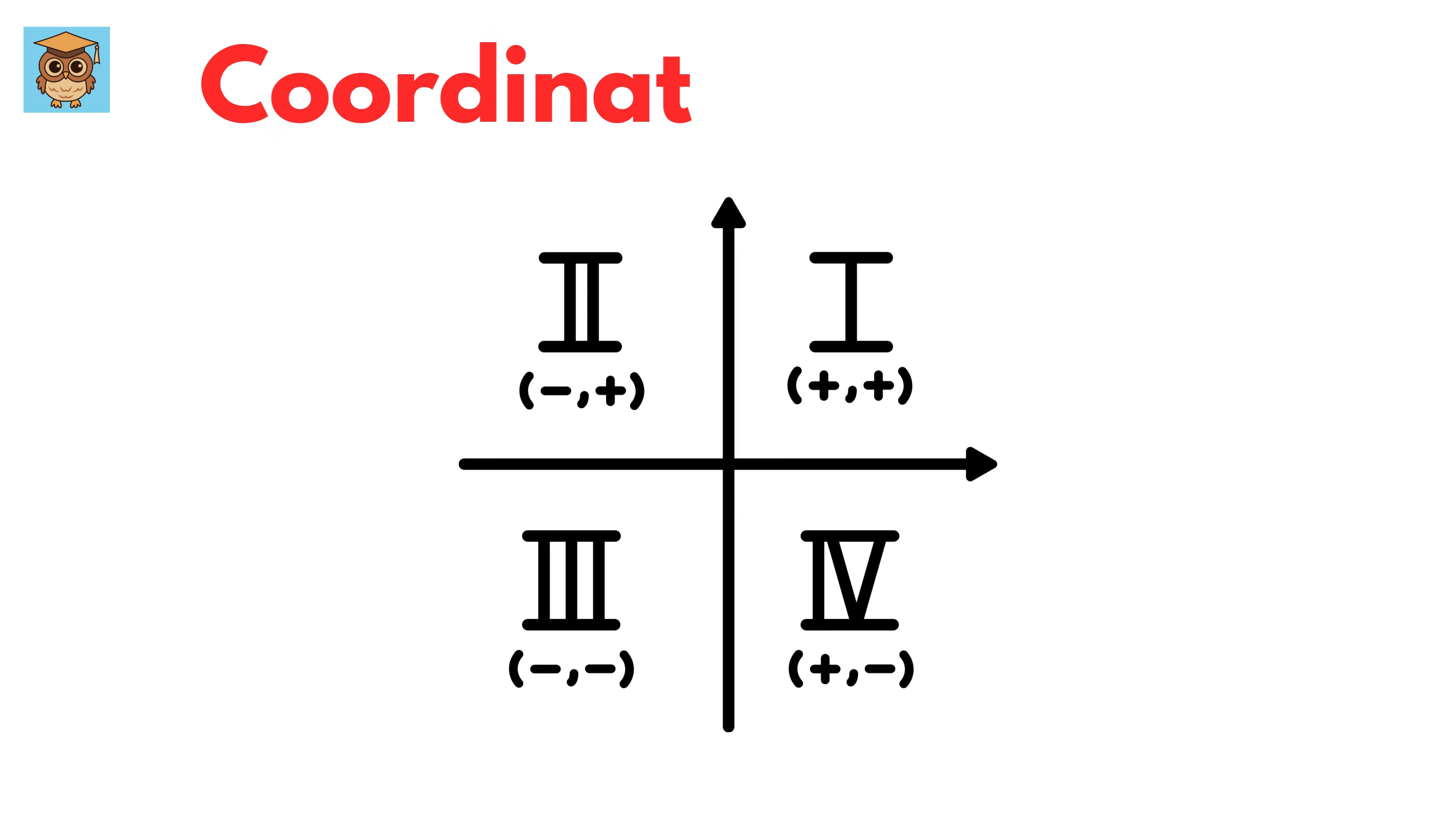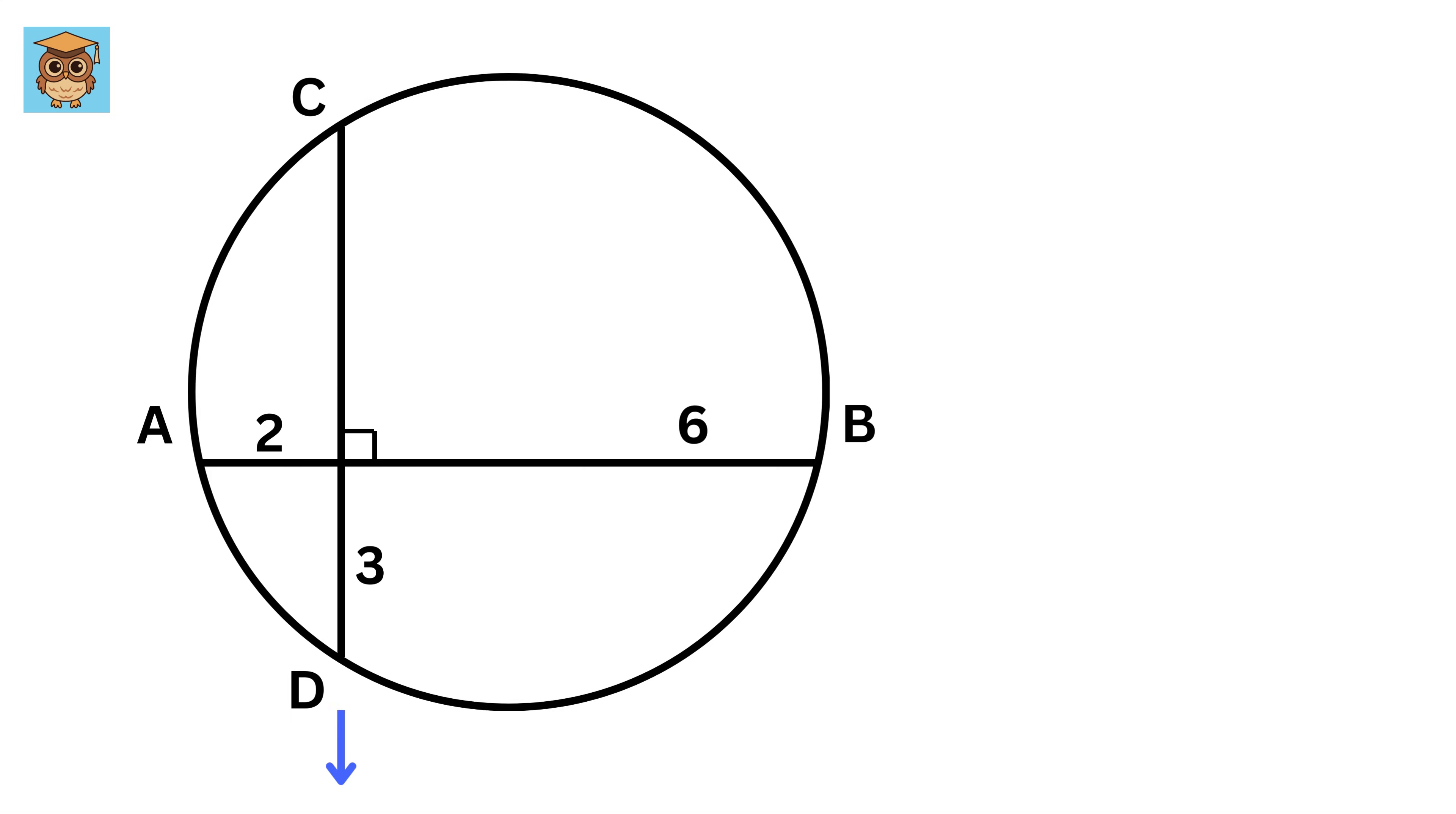We will use a simpler approach called coordinate geometry to solve this problem. First, we imagine the circle on a graph where the two chords meet at the point 0,0, the center of the graph.